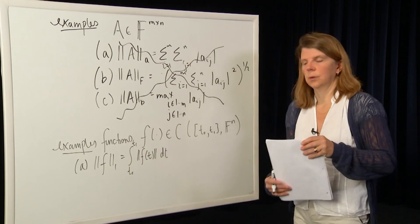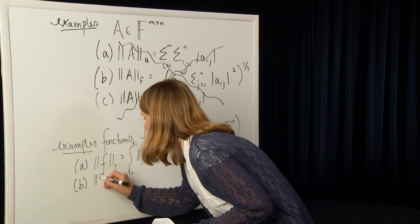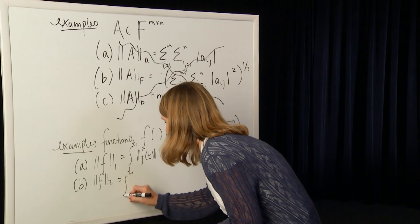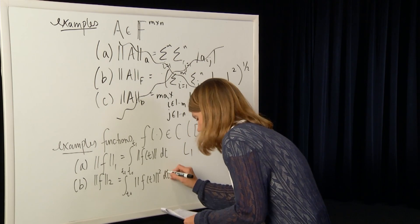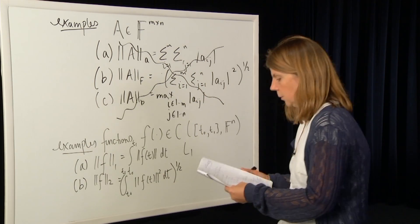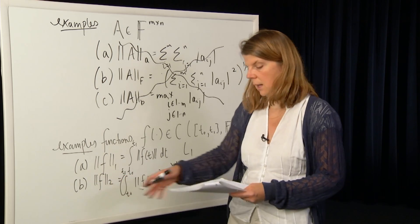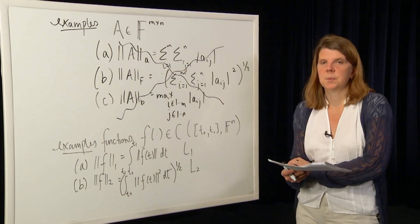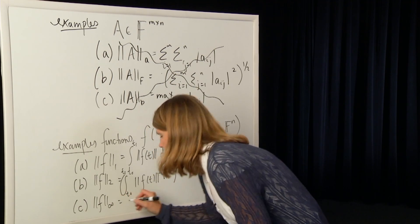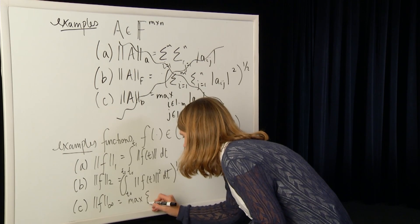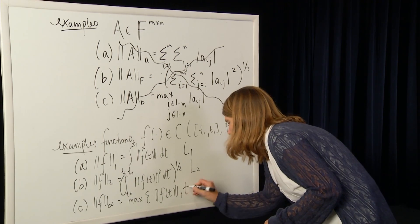One that we use all the time is the 2-norm for functions. The L2 norm is the integral from t0 to t1 of the norm of f(t) squared dt, all to the one-half. When we think about functions which are finite in the L2 norm, we typically call that space L2 — the space of square integrable functions. Another popular one in the function space is the infinity norm, which is the max vector norm that f(t) takes on over the whole interval.